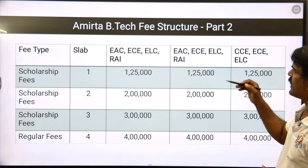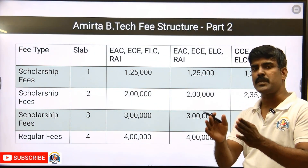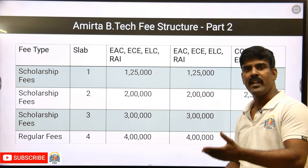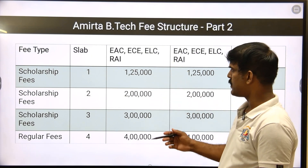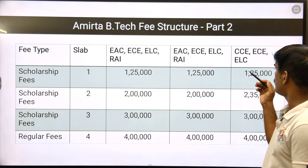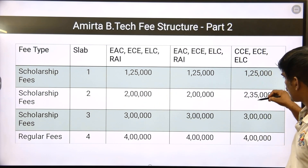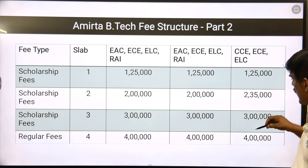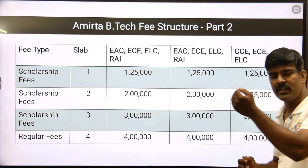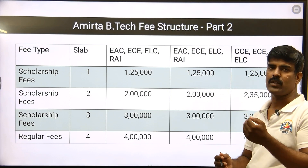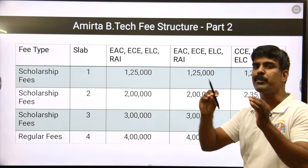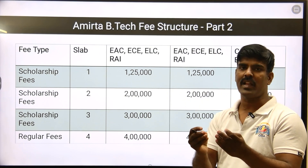For ECE, E&I, Robotics and CAC specialization courses, slabs 1 through 4 are: 1,25,000, 2,35,000, 3 lakhs, and 4 lakhs. So if you compare the CSE courses, it is a little bit less. This is the private institution fee structure covering all institutions.